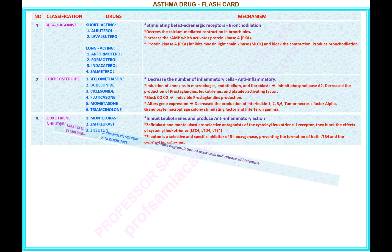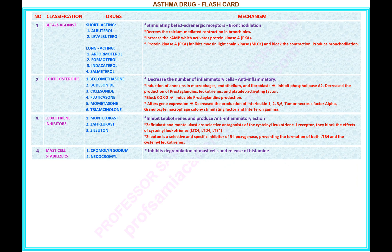Number 4 — name of the classification: mast cell stabilizers. Drugs under this classification: 1) cromolyn sodium, 2) nedocromil. Mechanism of mast cell stabilizers: inhibits degranulation of mast cells and release of histamine.